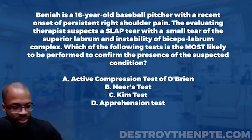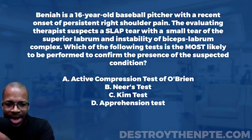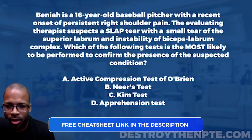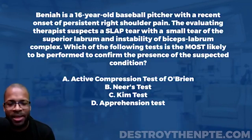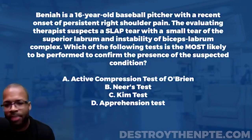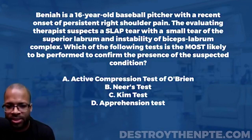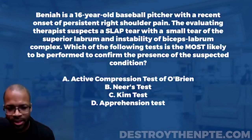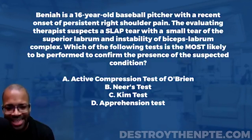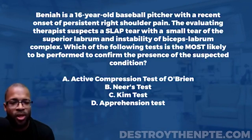For this week's Challenge Wednesday, we have our patient Benaiah — a 16-year-old baseball pitcher with a recent onset of persistent right shoulder pain. The evaluating therapist suspects a SLAP tear with a small tear of the superior labrum and instability of the biceps-labrum complex. Which of the following tests is most likely to be performed to confirm the suspected condition? A: Active compression test of O'Brien, B: Neer's test, C: Kim test, D: Apprehension test.